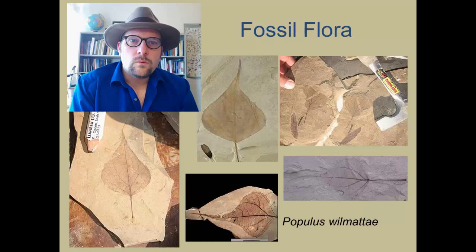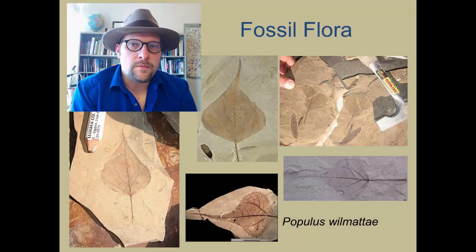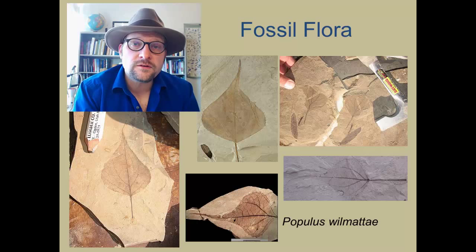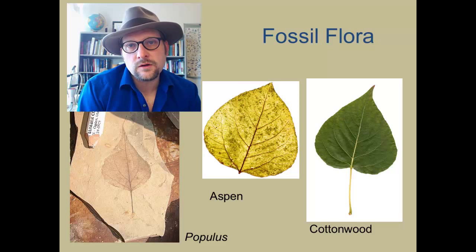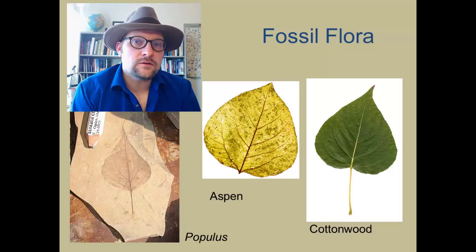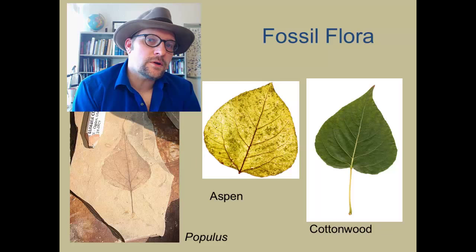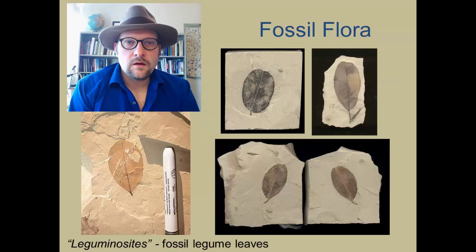One of the most common fossil leaves in the Green River Formation is Populus womati, with a very characteristic leaf — I have found a few of these specimens myself while splitting shale. Populus is a very specious plant with a number of living species, including cottonwood and aspen trees native to Utah. The Eocene species was likely more similar to living poplars and was common along the banks of the lake system.